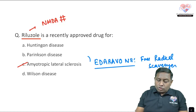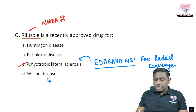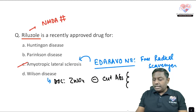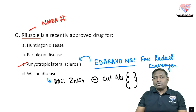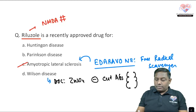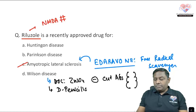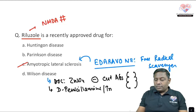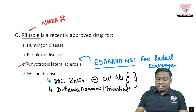For Wilson's disease, the drug of choice is zinc, which inhibits copper absorption from the intestine. In addition, D-penicillamine can be used as a chelating agent. Another chelating agent that is safer is trientine — it is more costly but has fewer side effects compared to D-penicillamine, which has a wide range of side effects.